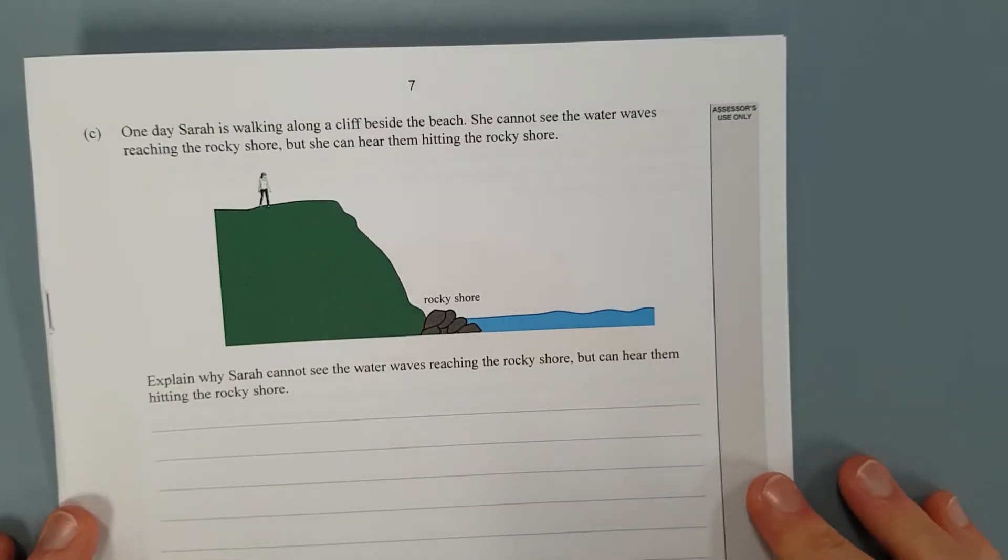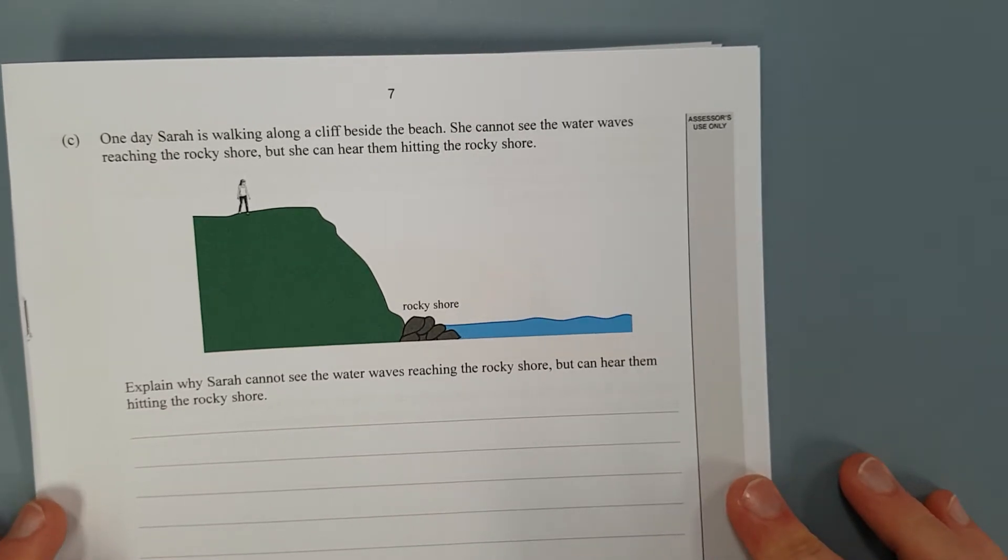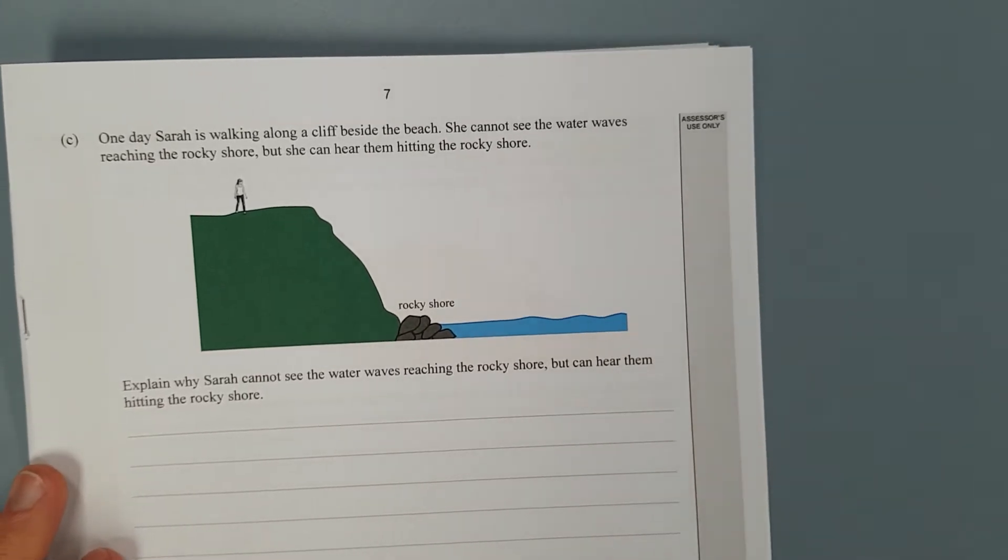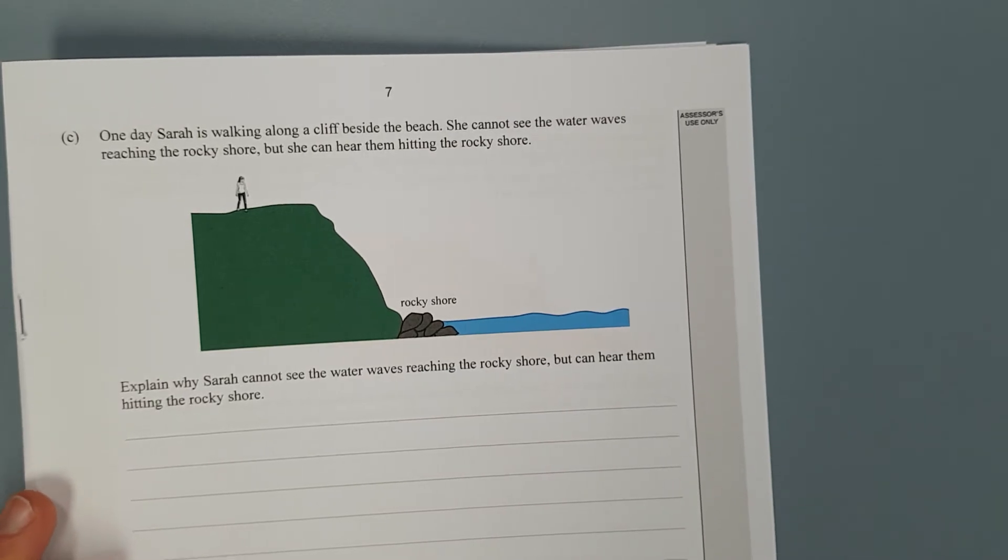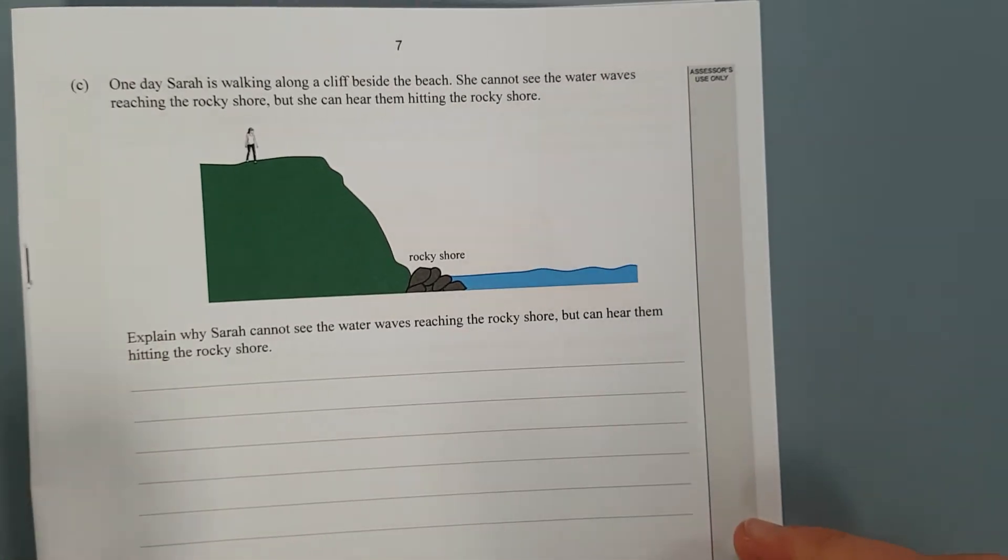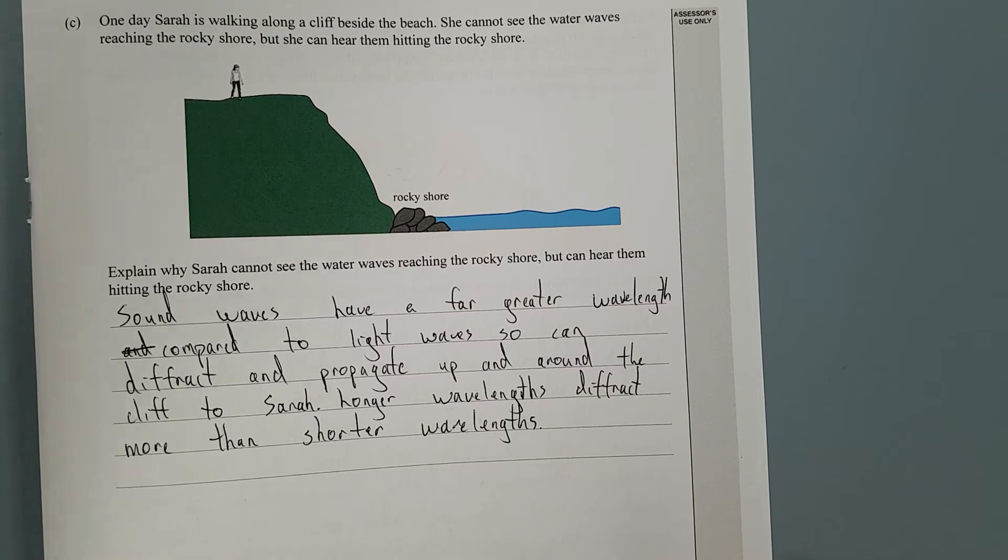One day, Sarah is walking along a cliff beside the beach. She cannot see the water waves reaching the rocky shore, but she can hear them hitting the rocky shore. Explain why Sarah cannot see the water waves reaching the rocky shore, but she can hear them. I'm going to pause the video right now and then go through it.